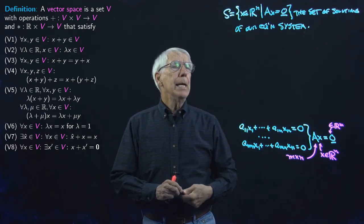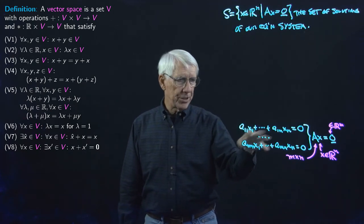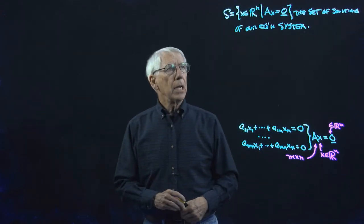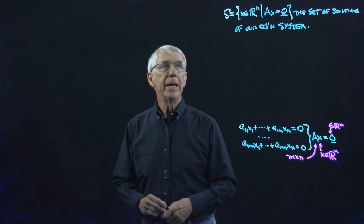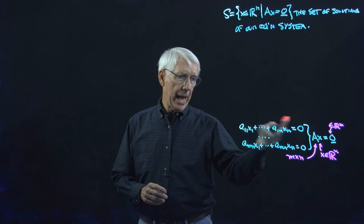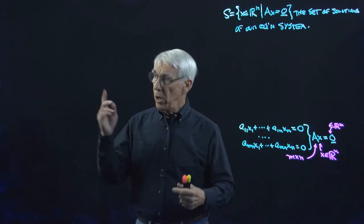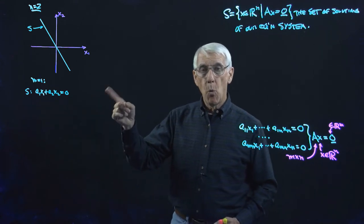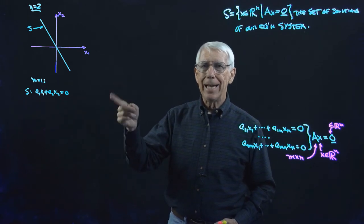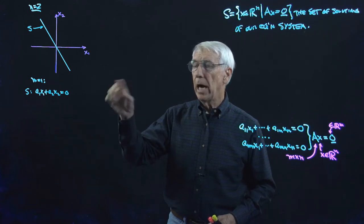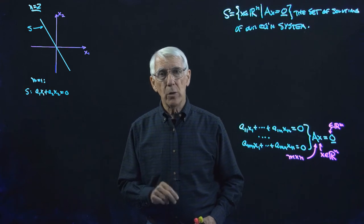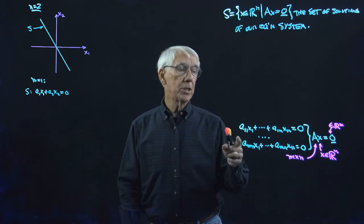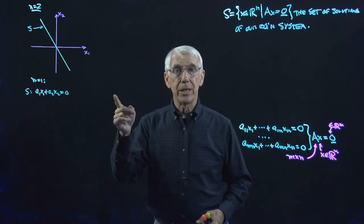Let's see what the set S looks like in several examples with different M's and N's. First, if N is 2 and M is 1 — two variables, one equation — we're in R2, and the equation is A₁X₁ plus A₂X₂ equals zero. The set S, the set of solutions, is going to be a line in R2 through the origin, because the zero vector is clearly a solution of that linear equation.